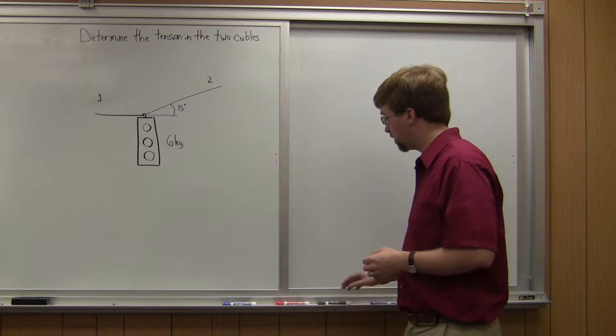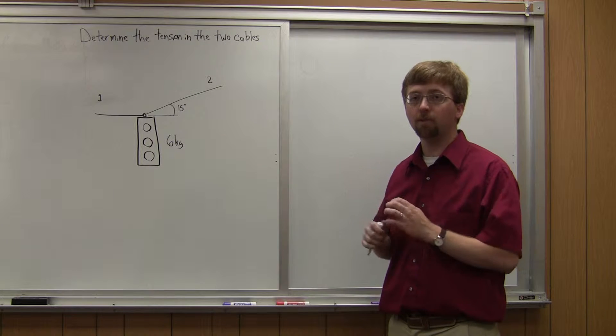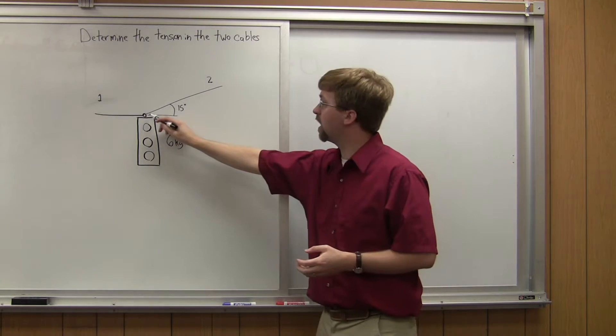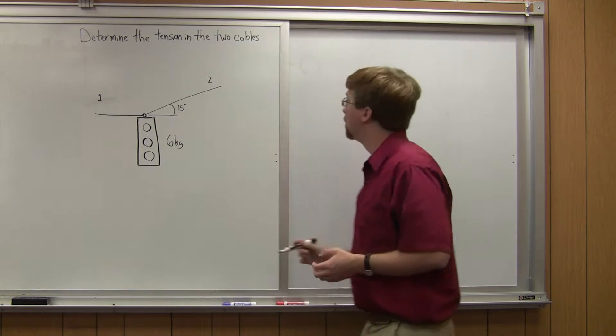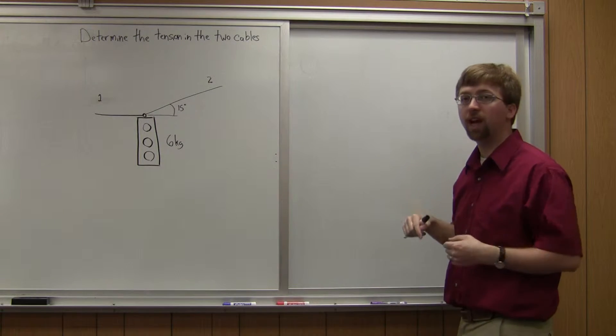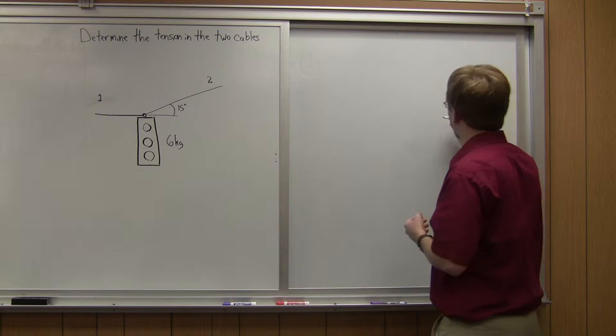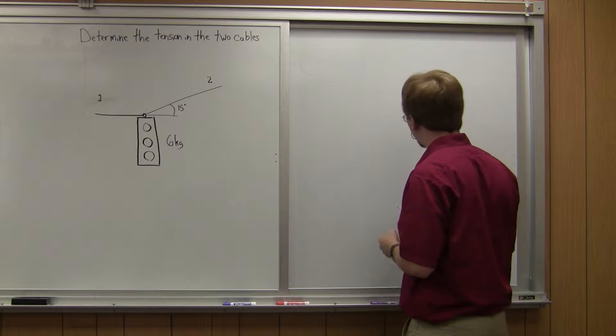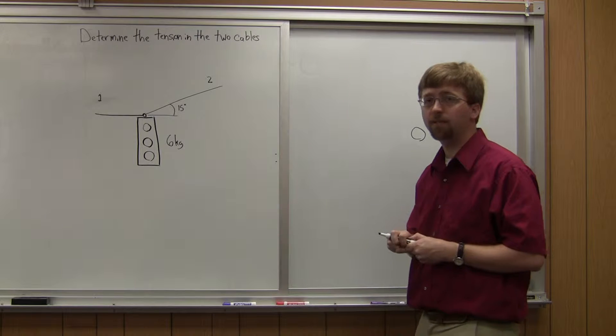So the first thing we do for any equilibrium problem is to draw a free body diagram. So I'm going to draw a free body diagram right here of this ring. And this is the ring where the two cables come in and support the actual traffic light. So at this ring I'm going to have three different forces.